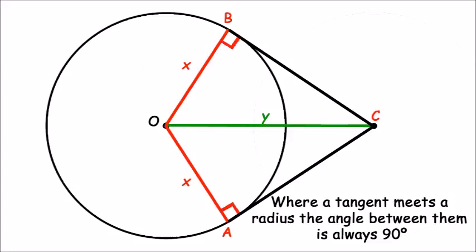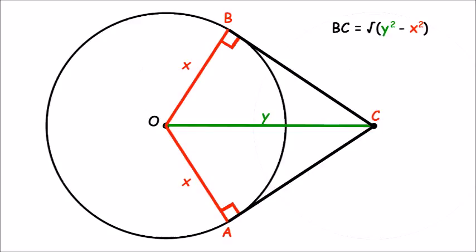So now we can use Pythagoras to calculate the length of BC, because we know that the hypotenuse is length Y and one of the sides is length X. And so BC equals the square root of Y squared minus X squared.